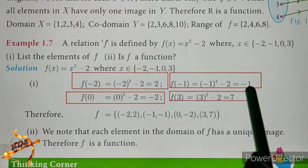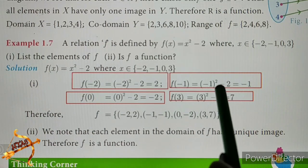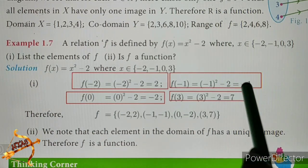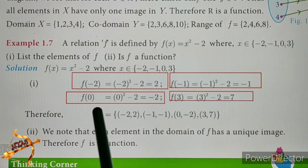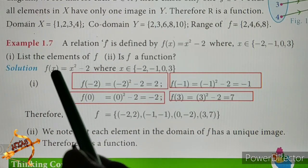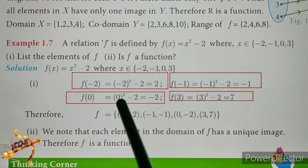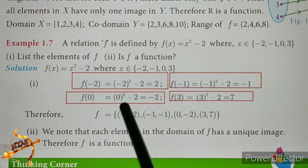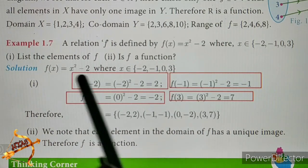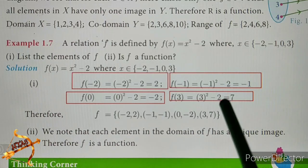Next, substitute f of 0: 0 squared is 0, that is 0 minus 2, and minus 2 is the answer. Next is f of 3: substitute 3 squared, which is 9, and 9 minus 2 is 7.